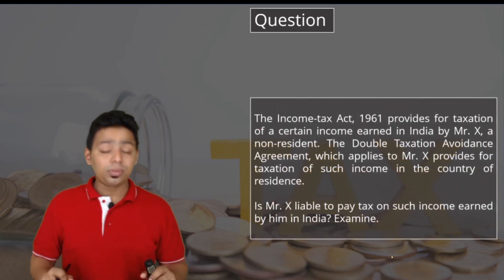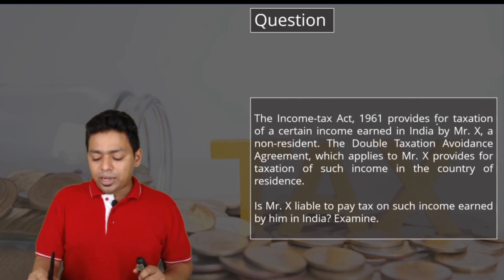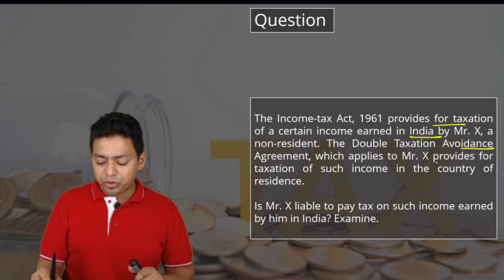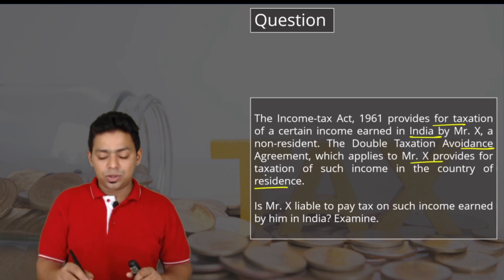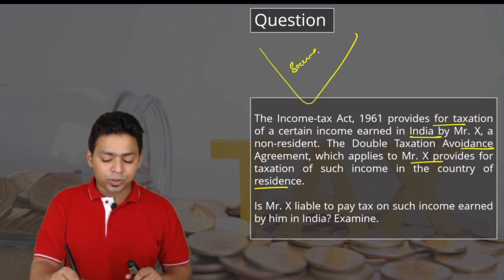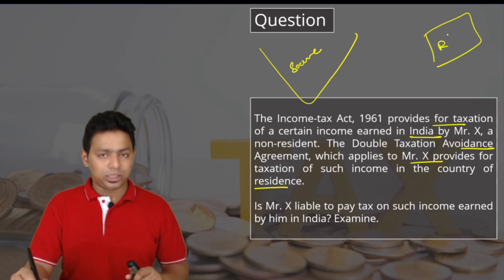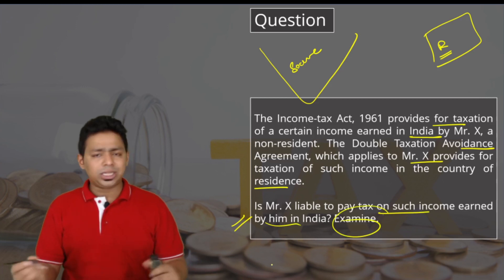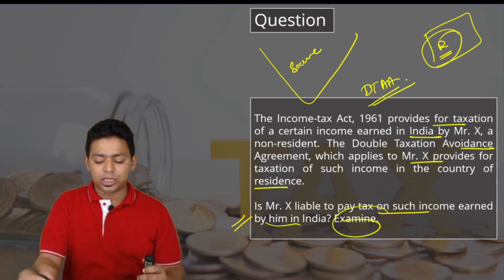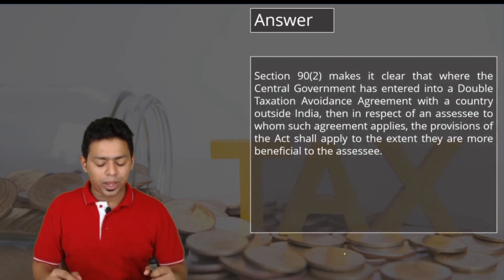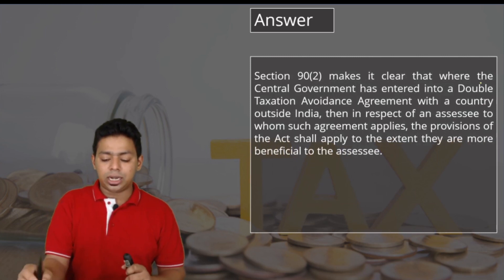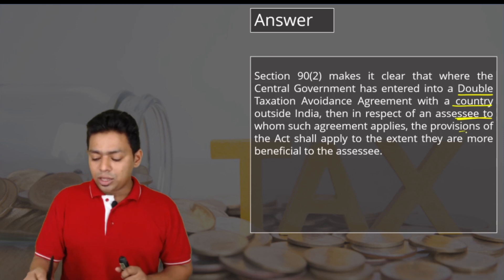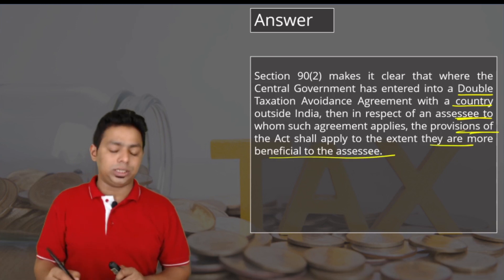Next question: The Income Tax Act 1961 provides for taxation of certain income earned in India by Mr. X, a non-resident. A DTAA applicable to X provides for taxation of such income only in the country of residence — whereas Indian income tax says it is taxable in the source country. Is Mr. X liable to pay tax on such income earned in India? Obviously no — because DTAA exists between the two countries, and per Section 90(2), whichever is more beneficial shall apply.